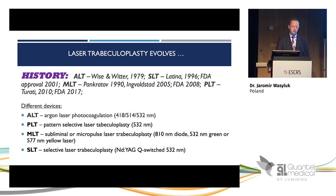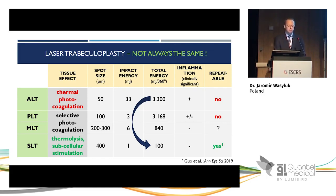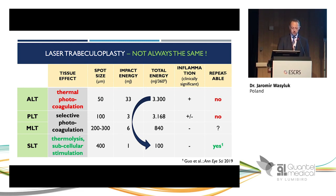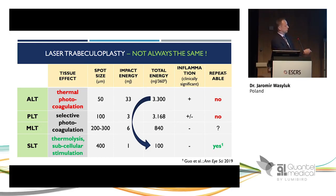Different devices use different laser sources — argon, semiconductor diode, or Nd:YAG. This table summarizes the key differences between these methods. With ALT, the crucial point is thermal photocoagulation causing necrosis of tissue — this effect is persistent and the procedure cannot be repeated. With PLT and MLT, it is selective photocoagulation with limited thermal effect. Total energy delivered in ALT is around 3,300 millijoules per procedure, versus only hundreds of millijoules per procedure with SLT.